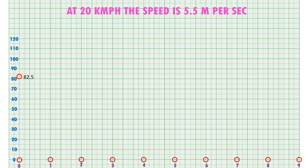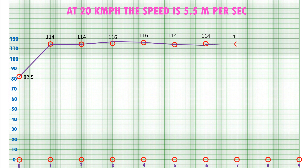I plotted the super elevation. This is the point of drop — station zero — and the super elevation is 82.5 mm. The next station is 114, then again 114, 116, 116, 114, 114, 114, and the 9th station also had 114. This is the area from where the train traveled and derailed over here.